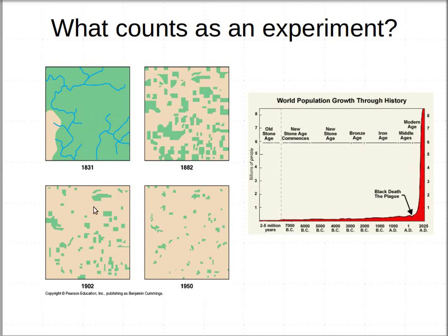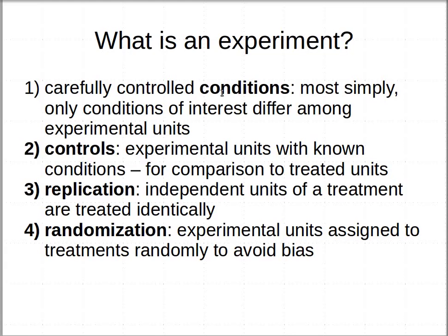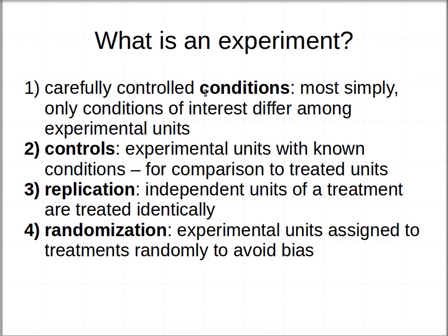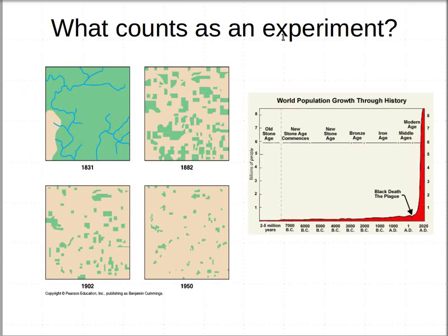For example, you could argue that this long-term mapped-out pattern of fragmentation of forests — this was actually from Wisconsin in 1831 through 1950 — was an experiment. You could say that this pattern of deforestation is an experiment, or that human population growth has been considered an experiment. Well, we should be careful about that. We should call it an unplanned experiment, because you need carefully controlled conditions, replication, you don't have a treatment group you can call an experimental control, and this wasn't randomized. Yes, those are changes transpiring through time, but it's an unplanned experiment — it doesn't really have the features we would require to call it a true experiment.